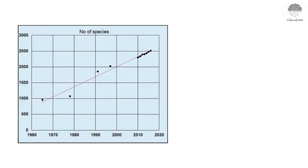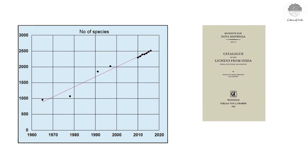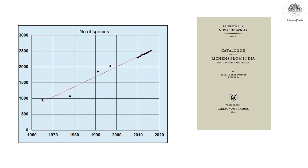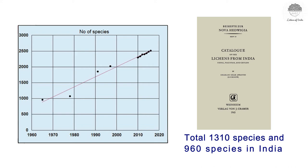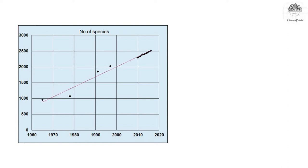If you see this graph, in 1965 Avasti produced the first list of lichens for India — the catalogue of Indian lichens. It consisted of 1310 species of lichens for the entire Indian subcontinent, out of which 960 belong to purely India.